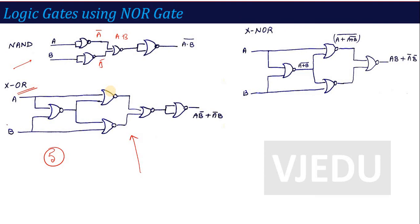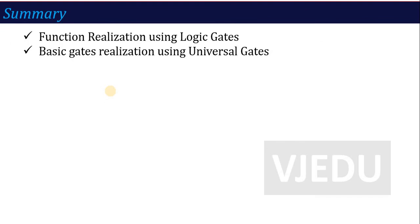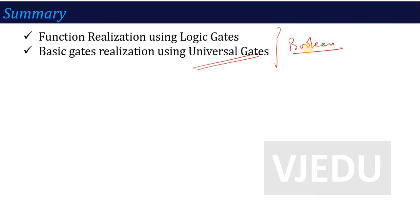With this, the lecture on functionalization using logic gates is complete. We learned how to design circuits from expressions and how to realize all gates using universal gates (NAND and NOR). In the next lecture we will discuss a very important topic: Boolean function minimization using Boolean algebra. Thank you.